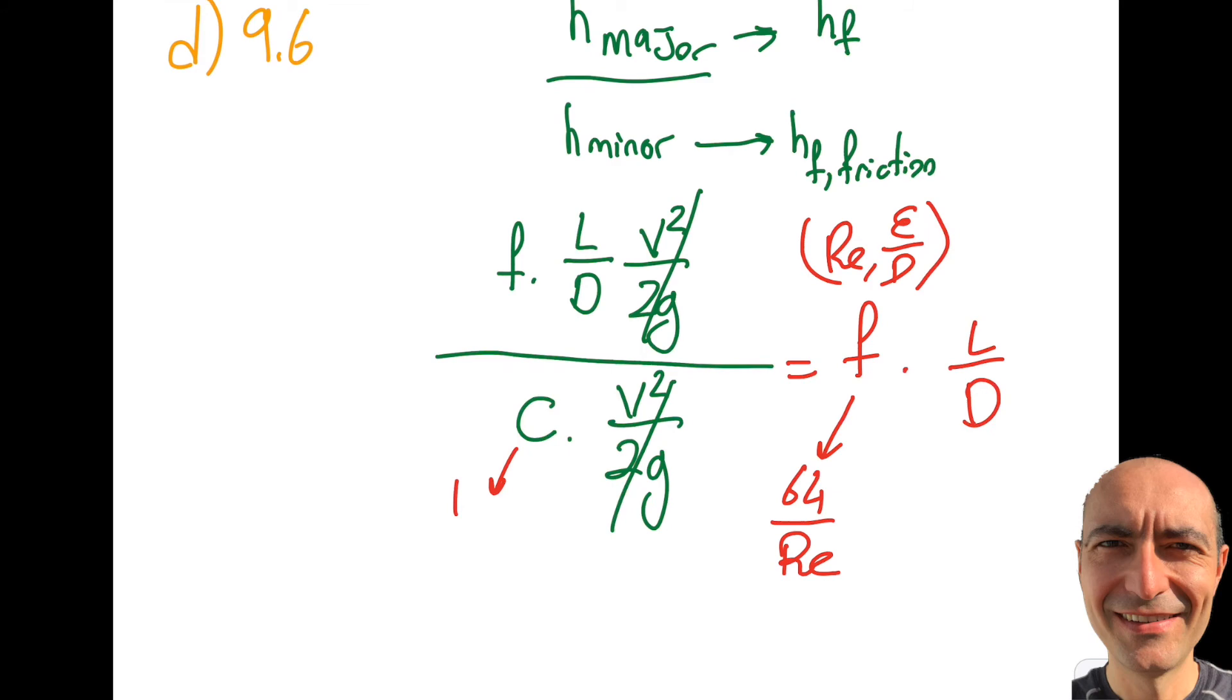And what they say is up to 2,000 they have a line like this and they say that hey this is 64 over Reynolds. So I would like you to note that. That's how I get the 64 over Reynolds.